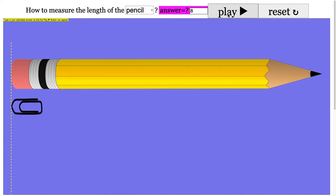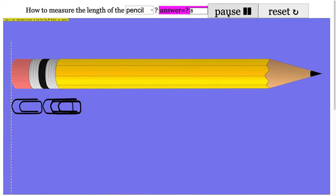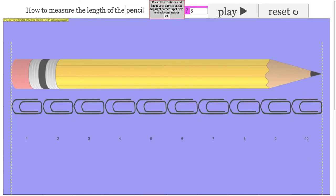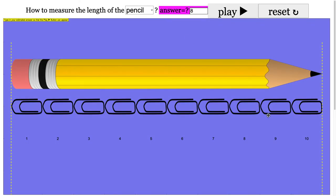Then the student is prompted to play to see how they can count the number of paper clips that span across the object. They can count the paper clips and then key in the correct answer.